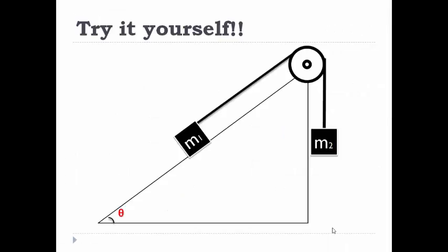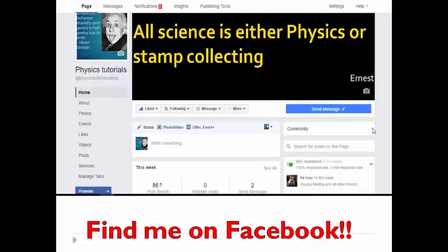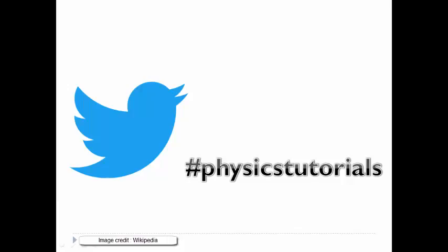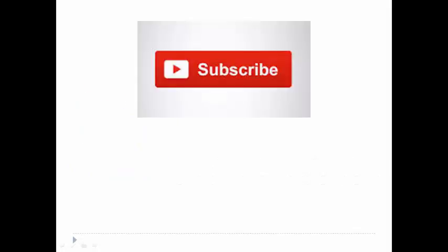Now this is a try it yourself question. Assuming that the given slope and the pulley are frictionless, find the acceleration of M1 and M2. Solve it yourself and you can respond with your answers on my Facebook page. You can tweet your answer using the hashtag PhysicsTutorials. Like the video, leave some comments and subscribe to the channel if you haven't already.